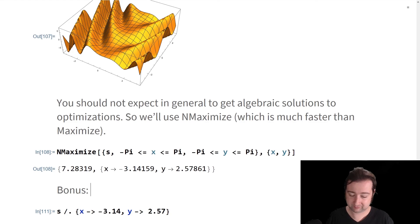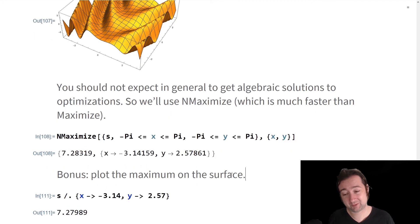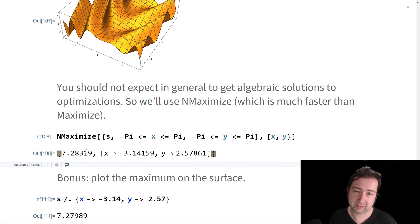Now my question for you is, there's a bonus question, plot the maximum on the surface. That might require that you look at mesh functions. I'll leave that completely up to you to decide if you want to do that or not. Then we can just check and see that if we take our function s, which remember was the derivative, and we replace x with negative 3.14 and y with 2.57 that we actually get the maximum that was produced by NMaximize.